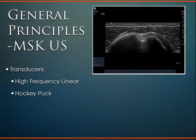In general with MSK we're mostly looking for high frequency, better resolution, less depth. We need the linear probe because of the focal points that are variable with curvilinear probes — we need a broad-spectrum view. There are also other specific MSK transducers, such as the 'hockey puck,' which is a small, skinny transducer helpful for small digits.